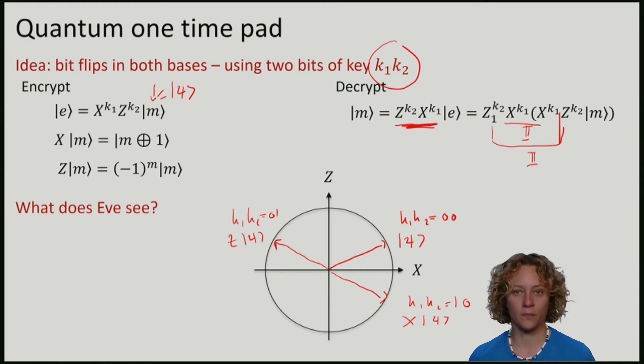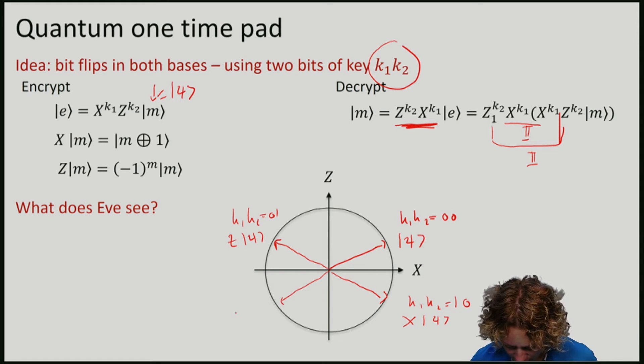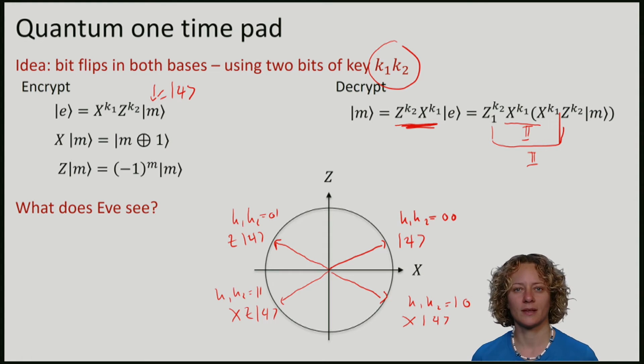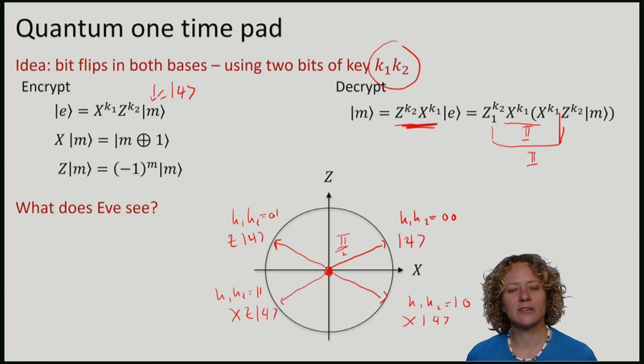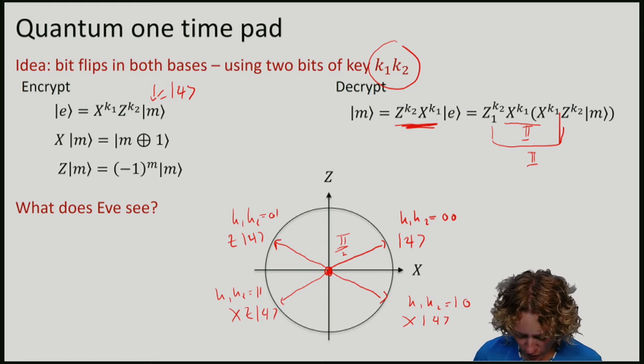If I'm in the case where the first one is zero and the second one is one, I will apply Z to my qubit, ending over here. If I do both of them, I first flip around the Z axis and then around the X axis, you can check that we will end up down here. K1, K2 is 1, 1. Now if I average out all of these four points, we arrive exactly in the middle. And you can convince yourself that this is the case no matter where I started with.